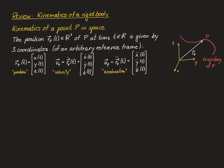Geometrically speaking, the velocity is a vector corresponding to the change of position over a very short period of time — so it's a tangent to the trajectory at the current position. The acceleration is a vector that expresses the change of the velocity vector over a very short period of time.